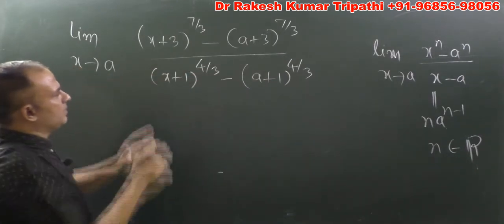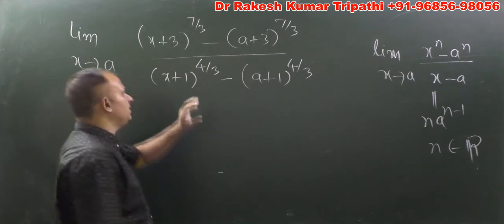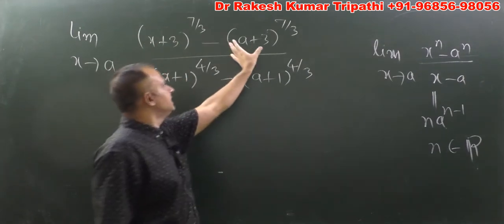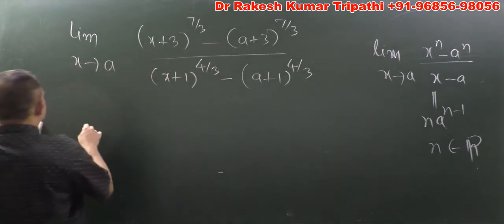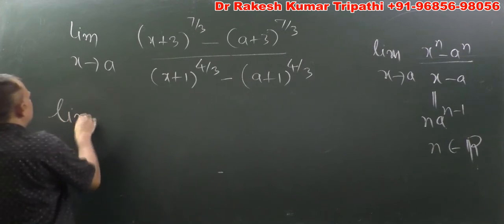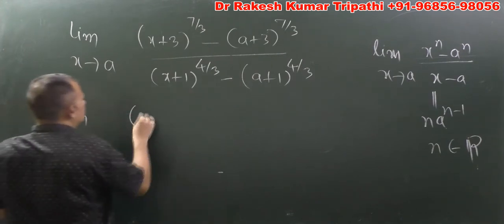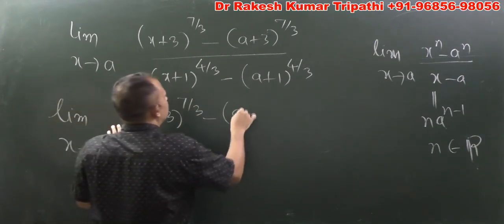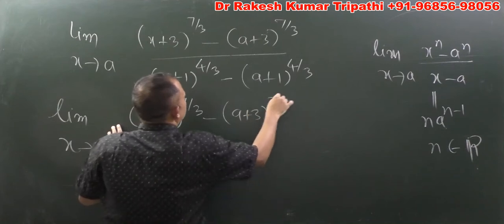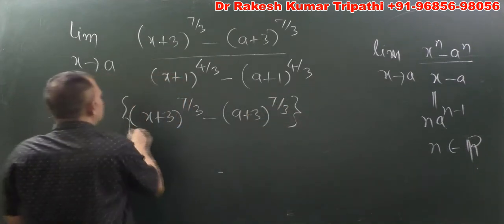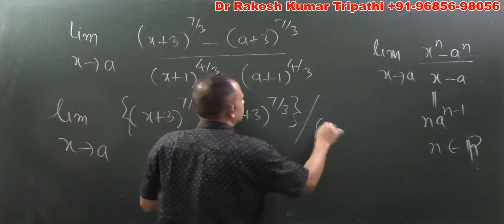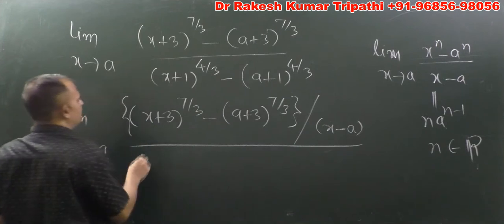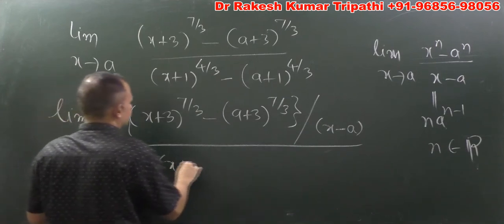To apply that formula, we need to have in the denominator 'this minus this.' Let's see how it can be created here. The limit extends to a, and the numerator is (x+3)^(7/3) minus (a+3)^(7/3). We can divide this numerator by x minus a, and in the same way the denominator by x minus a.